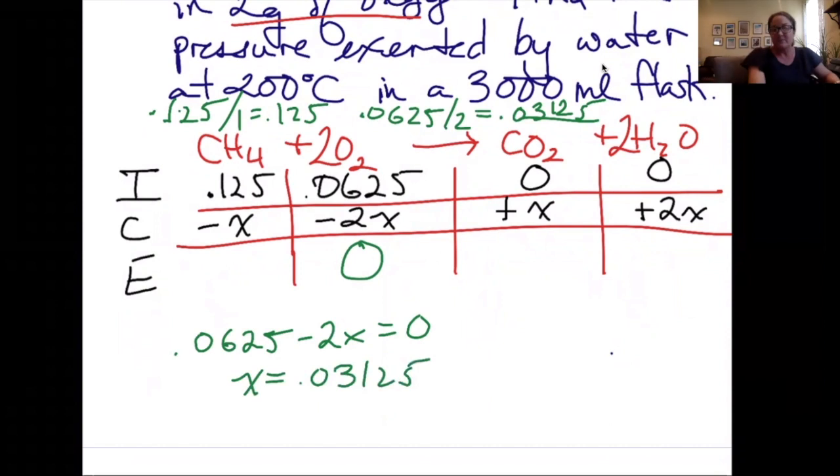Now I can plug in x to get my final values of everything. 0.125, filling in this column, 0.125 minus 0.03125 gives me 0.09375 moles of CH4 left over.